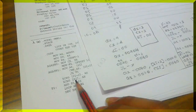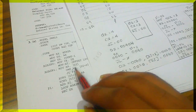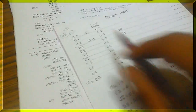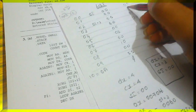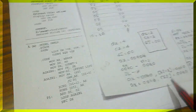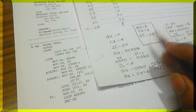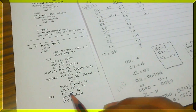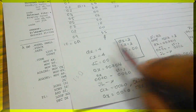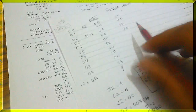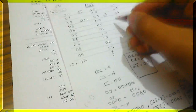Next, XCHG SI, AX exchanges SI with AX. AX was 0060H so SI becomes 0060H, and AX becomes the previous SI value 0070H. Then ADD SI, 02 adds 2 to SI — SI was 0000 so it now becomes 0002, pointing to the next location in the list.